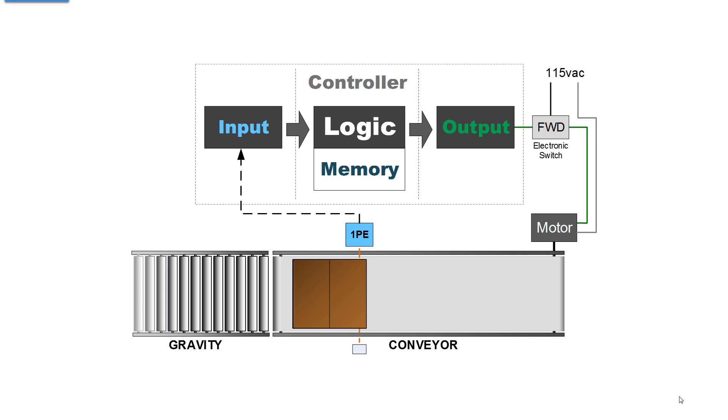The output from the photo sensor to the controller is binary. Something is blocking or not blocking. Zero or one. Zero volts or 24 volts DC.